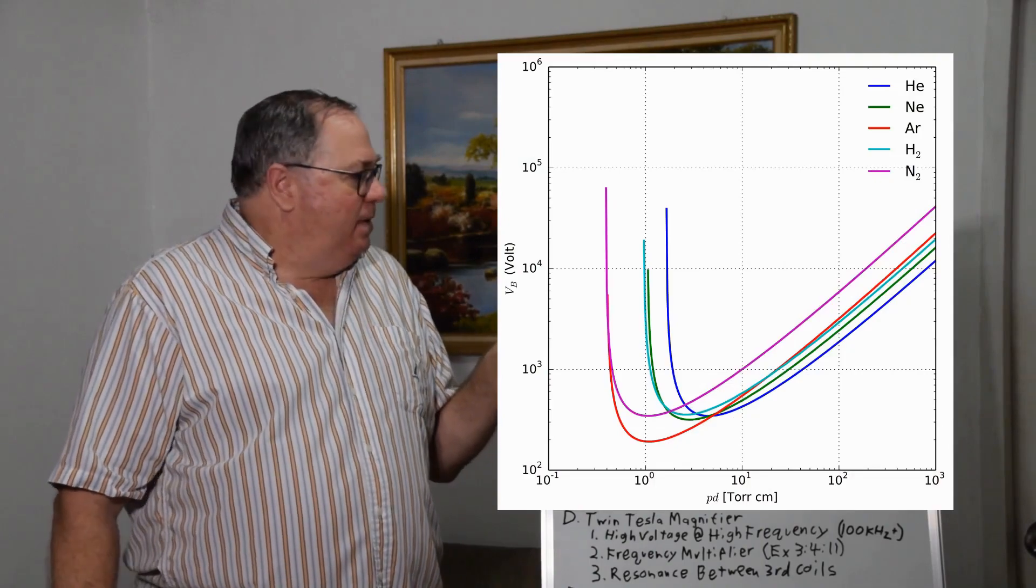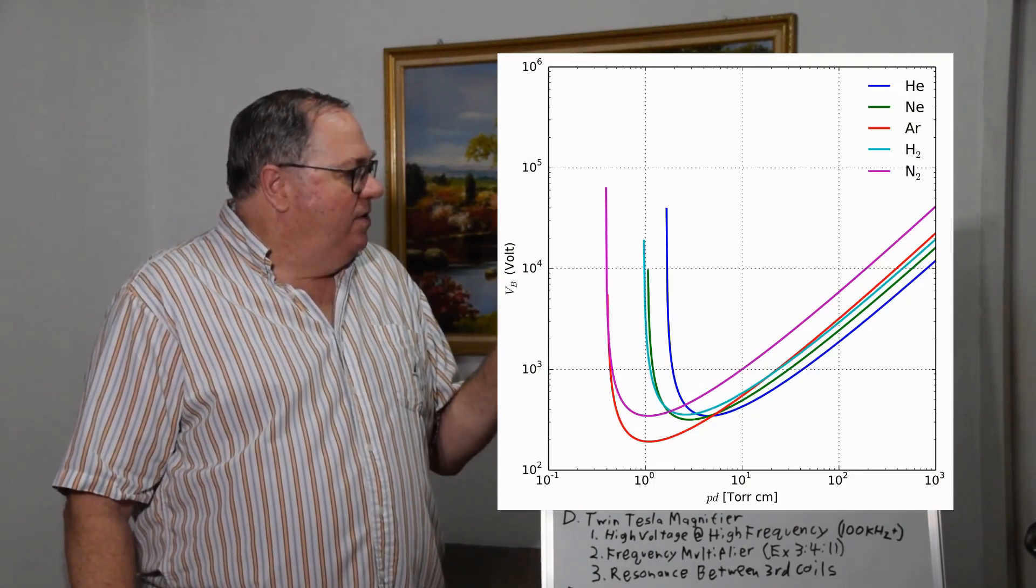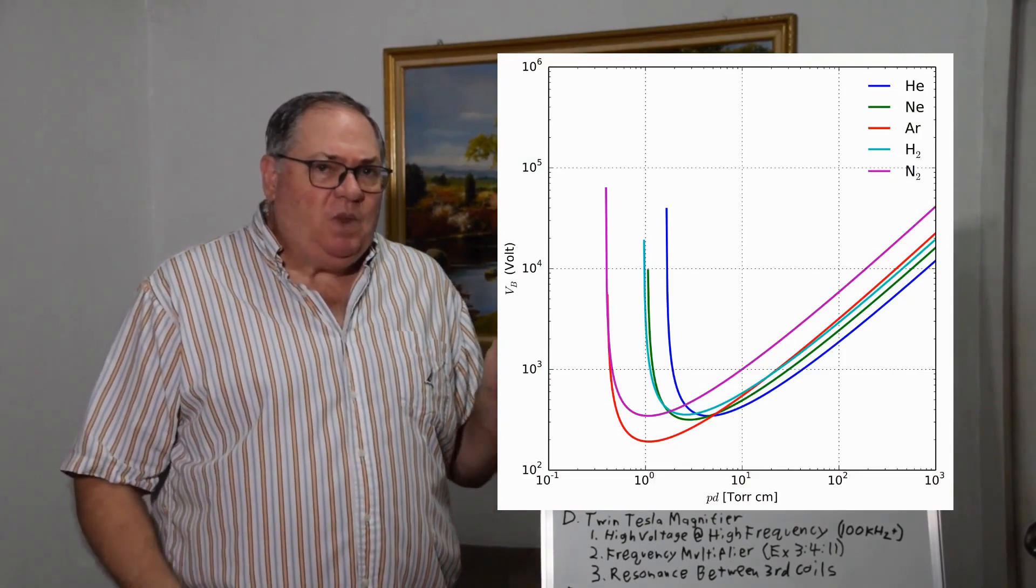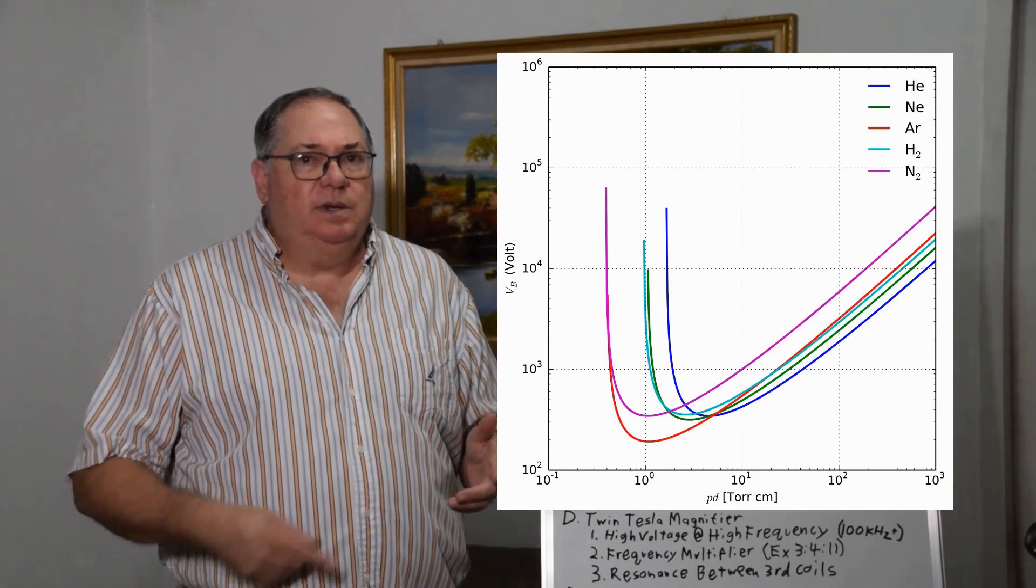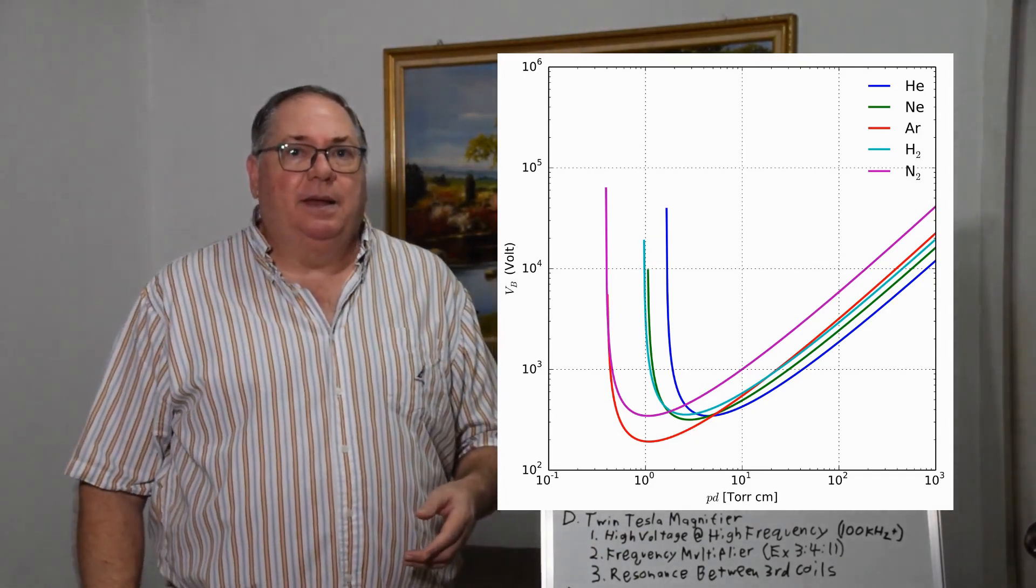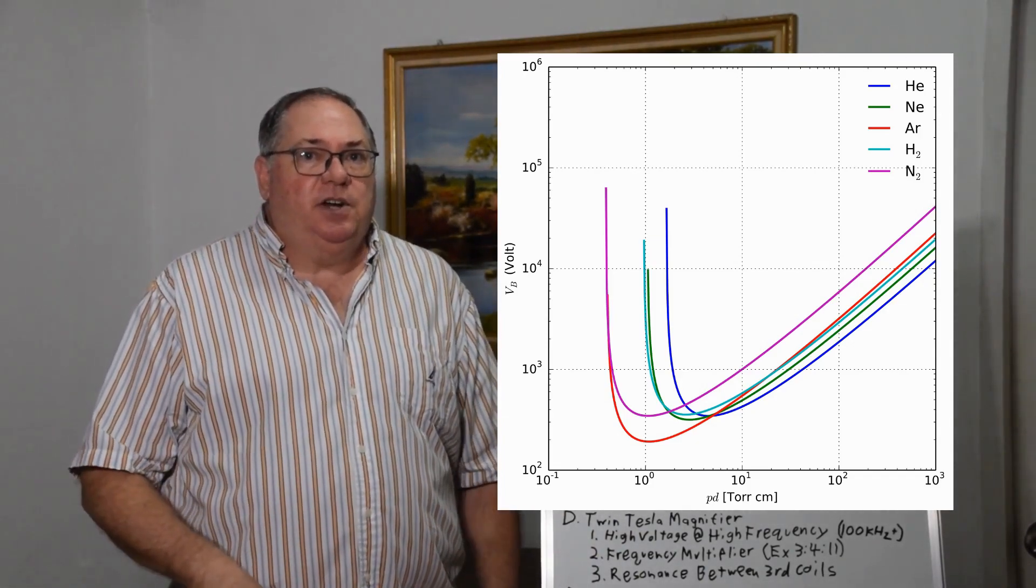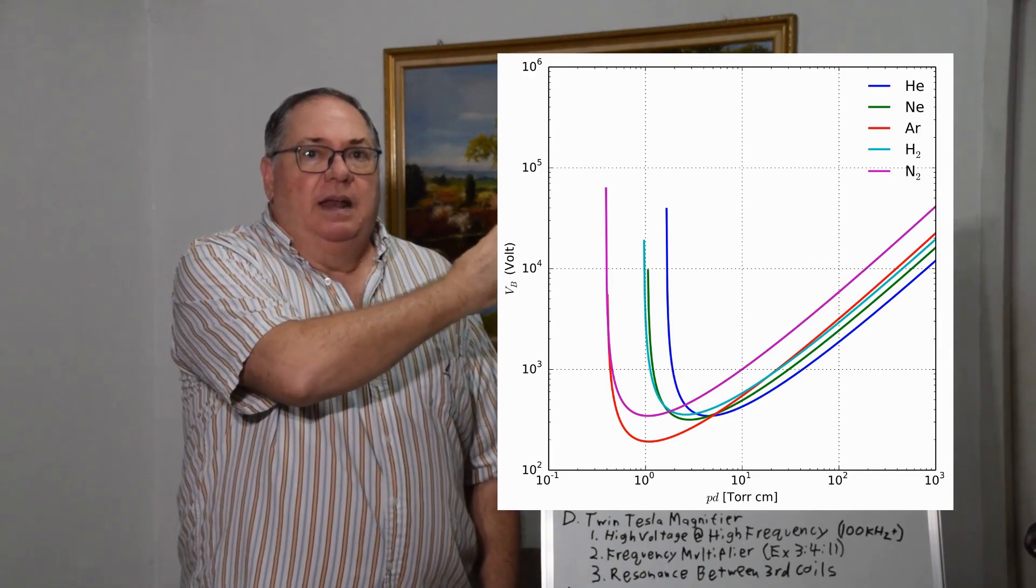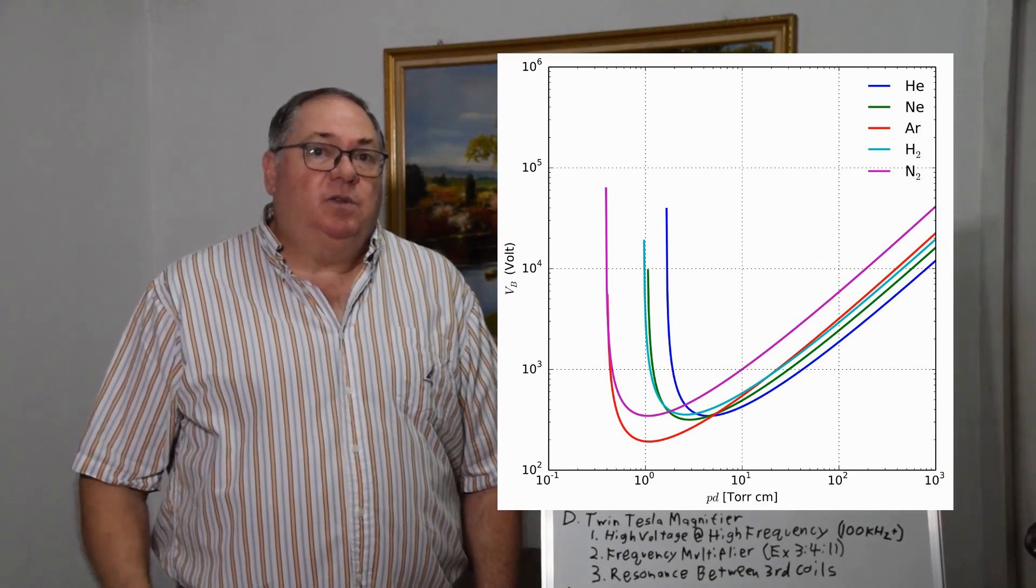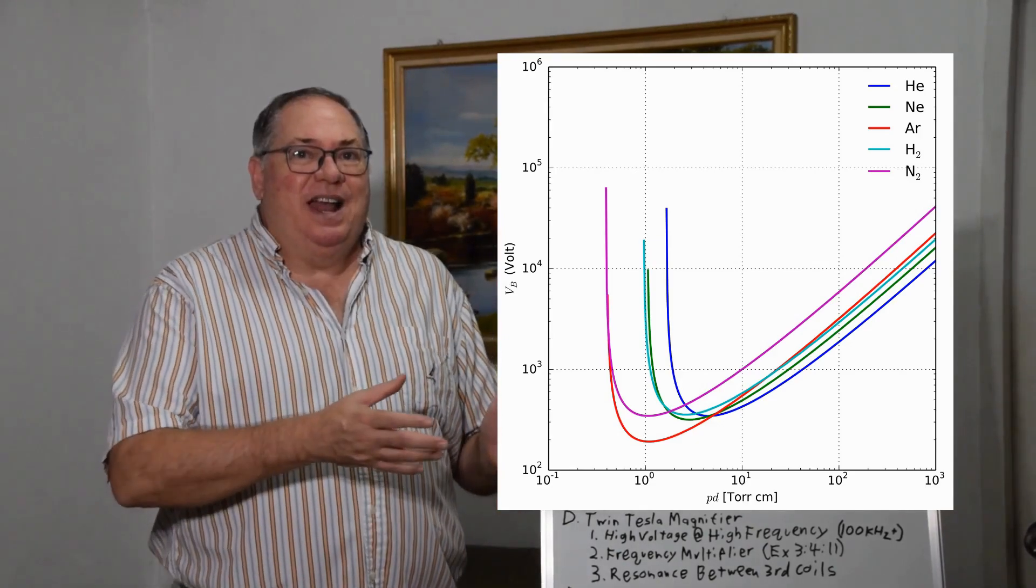The regime depends on your fill gas, your voltage, and your pressure, primarily what we call the Paschen curve, which starts high, goes low, then dips back up. The vacuum arc discharge regime is at the low pressure end.